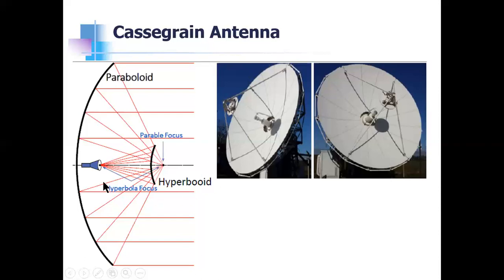The main advantage of this Cassegrain design is that the feed is placed at the vertex. Having the feed here means there is no need for long transmission lines out from the feed — if the feed were placed at the focus, long transmission lines would be required for the supports. So that need is eliminated, which is one advantage.